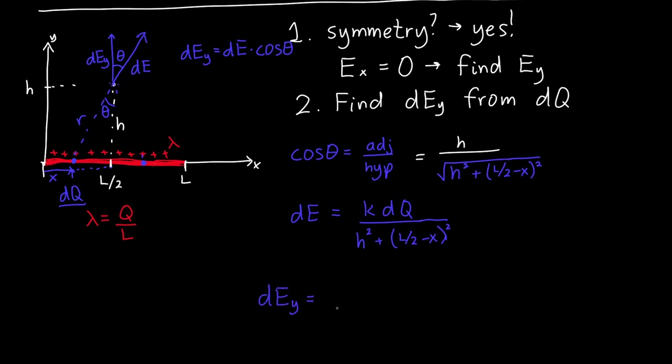Now we can combine everything to give us DEY. So this is just equal to DE, which we said is K DQ divided by H squared plus L over 2 minus X squared. And then cosine theta, which we just have as H divided by the square root of H squared plus L over 2 minus X squared.